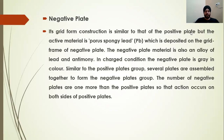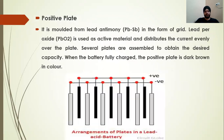The negative plates are always one more in number than the positive plates. For example, if there are 5 positive plates (shown in black), there will be 6 negative plates (shown in grey).